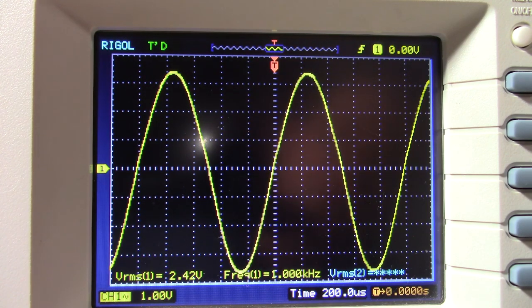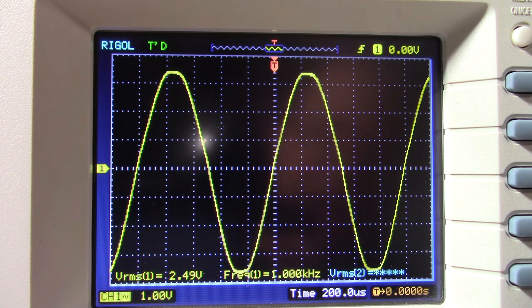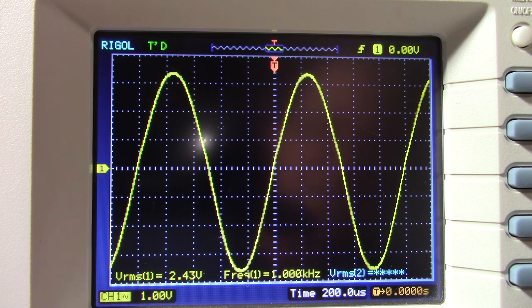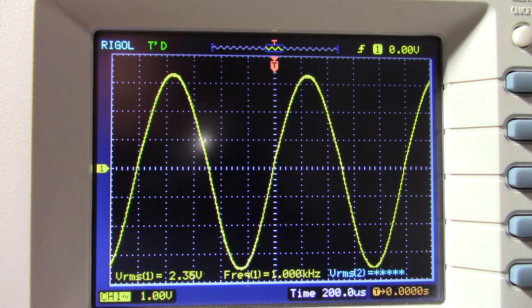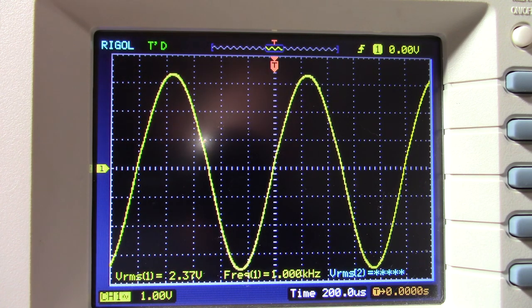Okay, I put a 4 ohm load on the output there and let's see what kind of output we're getting now. It's clipping. This is touchy. 2.35 volts RMS. 2.35 squared divided by 4. 1.38 watts. So we're getting over a watt with 4 ohm loads but it's still not great.